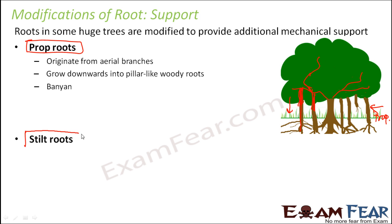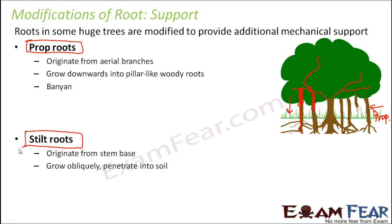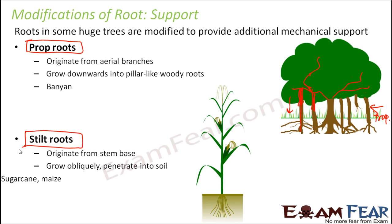The next modification are stilt roots. These originate from the stem base. For example, in sugarcane or maize — these are not very huge trees, they are small plants.